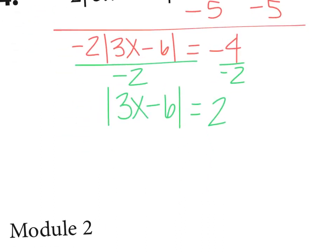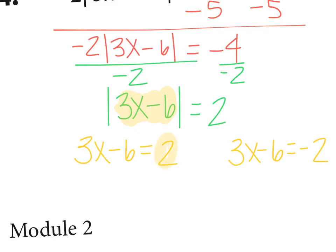Your goal is always to get the absolute value symbol by itself, because once the absolute value symbol is by itself, you can separate it out. Why do we separate this out? Why are we writing 3x minus 6 equals positive 2 and 3x minus 6 equals negative 2? Because whatever is inside the absolute value symbol can either be something positive or something negative — either way, when it comes out, it's going to end up being positive.